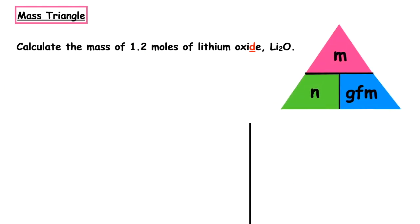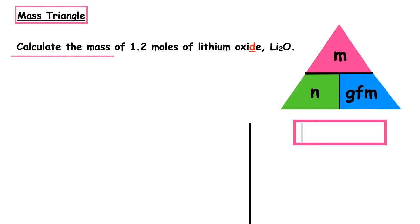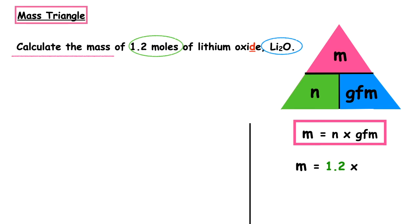You can pause the video to have a go at this one. This question wants us to calculate the mass of 1.2 moles of lithium oxide, and the formula is given as Li₂O. We write out the formula for mass using our mass triangle: m = n × GFM. The number of moles given in the question is 1.2. We don't have the gram formula mass but we do have the formula to calculate it.